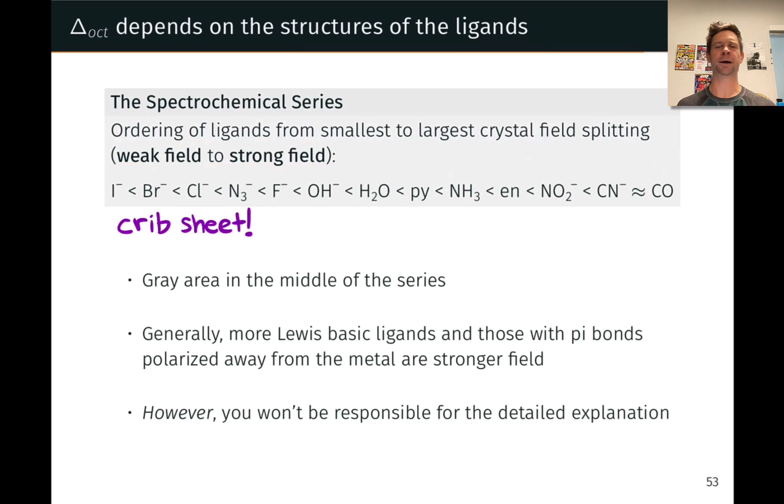Just to talk a little bit more about the spectrochemical series to kind of get under the hood a little bit of this, we can note that generally speaking, and there are exceptions, so this is a big generalization, but generally more Lewis basic ligands, stronger Lewis bases, are stronger fields. So for example, hydroxide is a stronger field ligand than iodide, hydroxide being a stronger Lewis base than iodide. However, it's also true that relatively Lewis acidic ligands are also stronger fields. Carbon monoxide comes to mind.